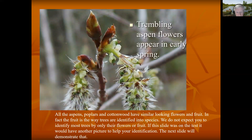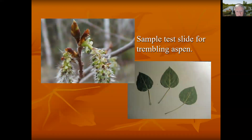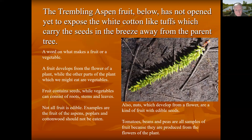Aspens, poplars, and cottonwoods have similar-looking flowers and fruit. We do not expect you to identify most trees by only their flowers or fruit. If this slide was on the test, it would have another picture to help you identify the tree species. This is more like a sample of a test slide on tree bee with the flower and the leaves. The trembling aspen fruit shown here has not opened yet to expose the white cotton-like tufts, which carry the seeds in the breeze away from the parent tree.